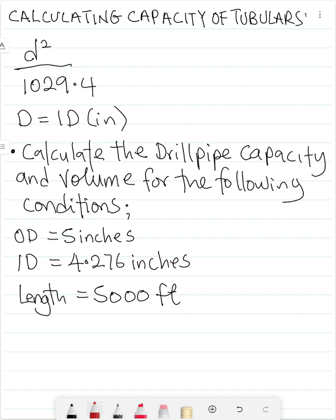So the quick equation for calculating the capacity of tubulars is what you see up here: d squared all over 1029.4.